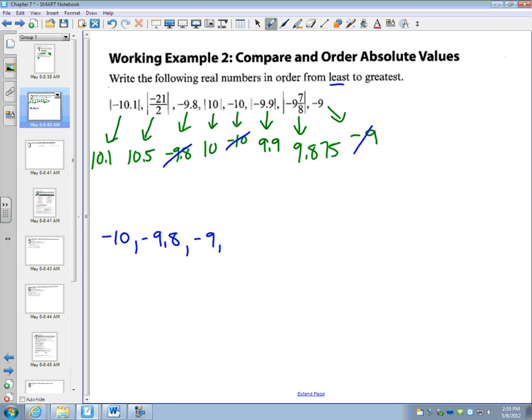And now I'm starting into my positives. So my smallest positive number is right here. It's going to be the absolute value of 9 and 7 eighths. So I'm just writing what I saw here. That one's done. And then it's going to be this one. The absolute value of negative 9.9.